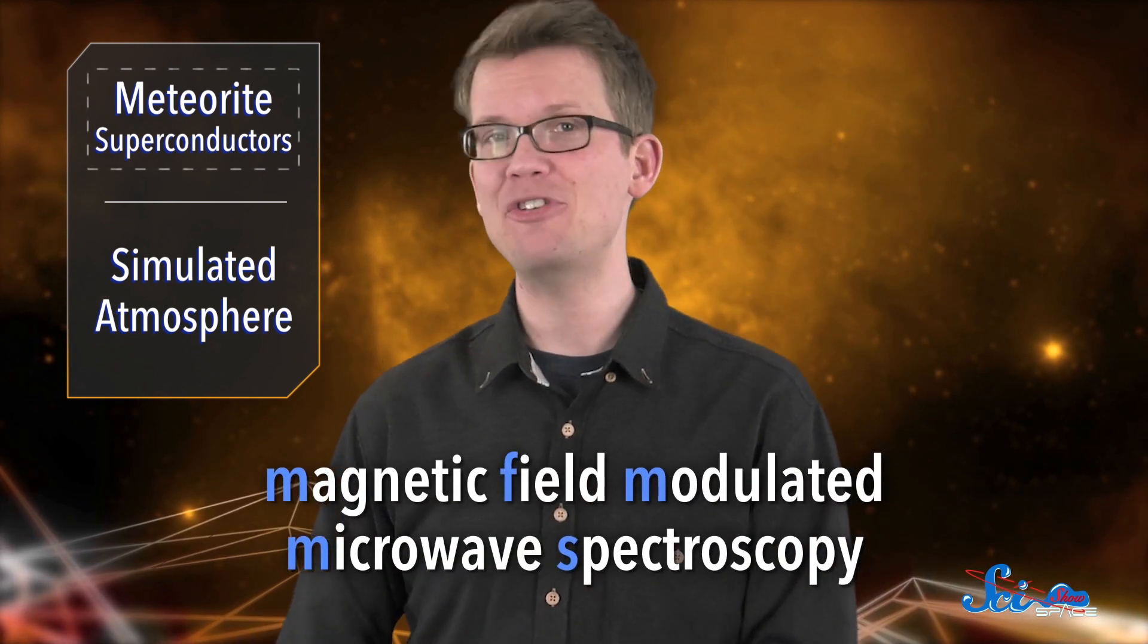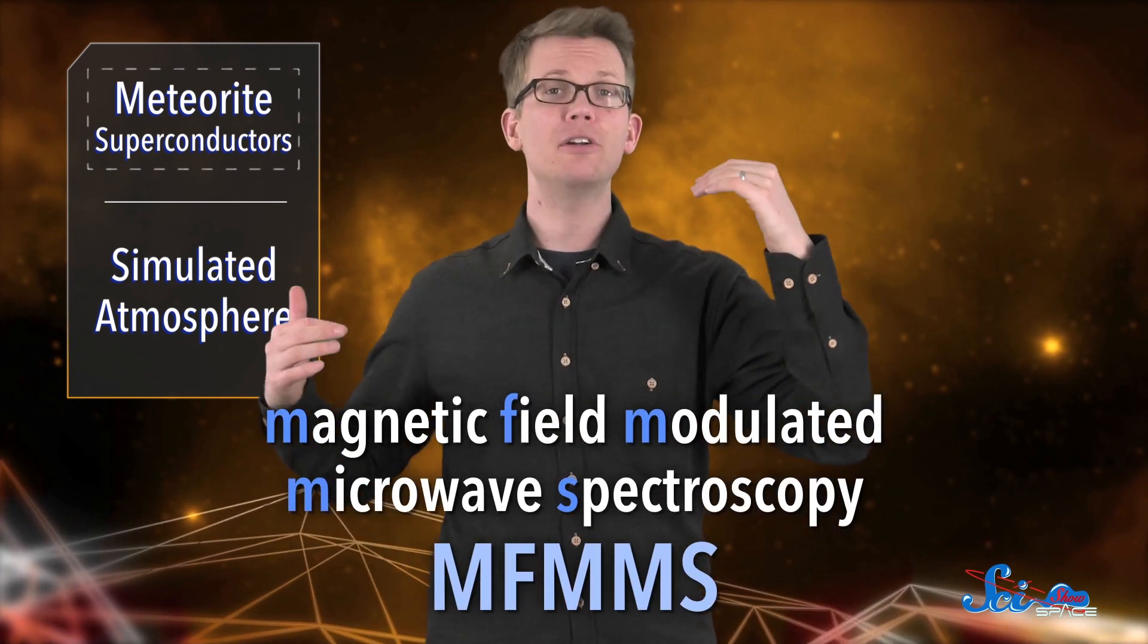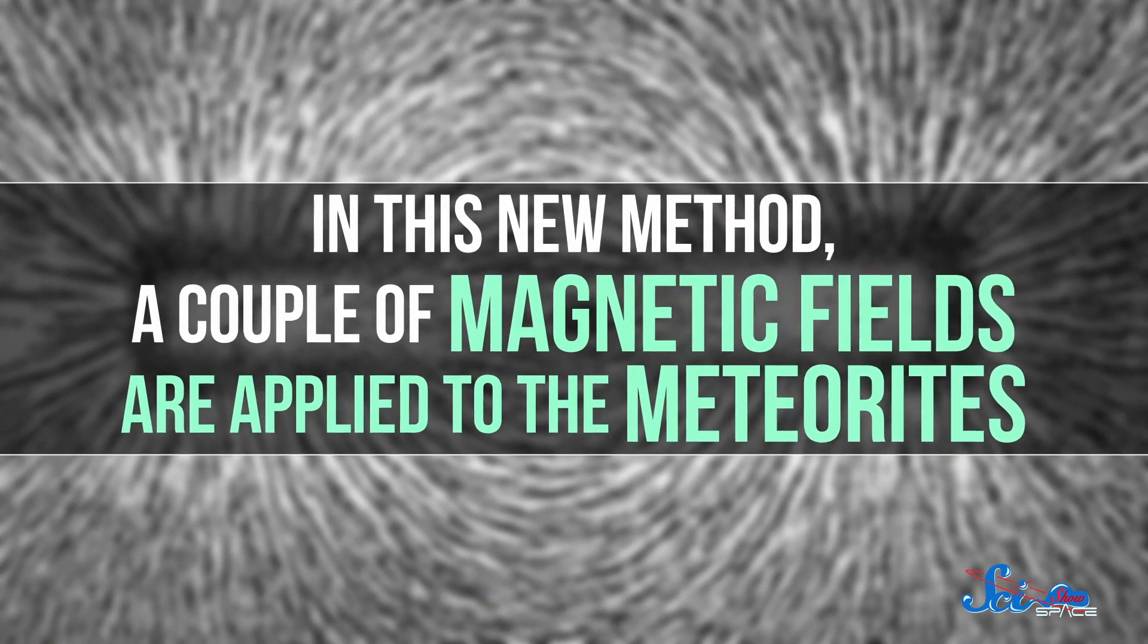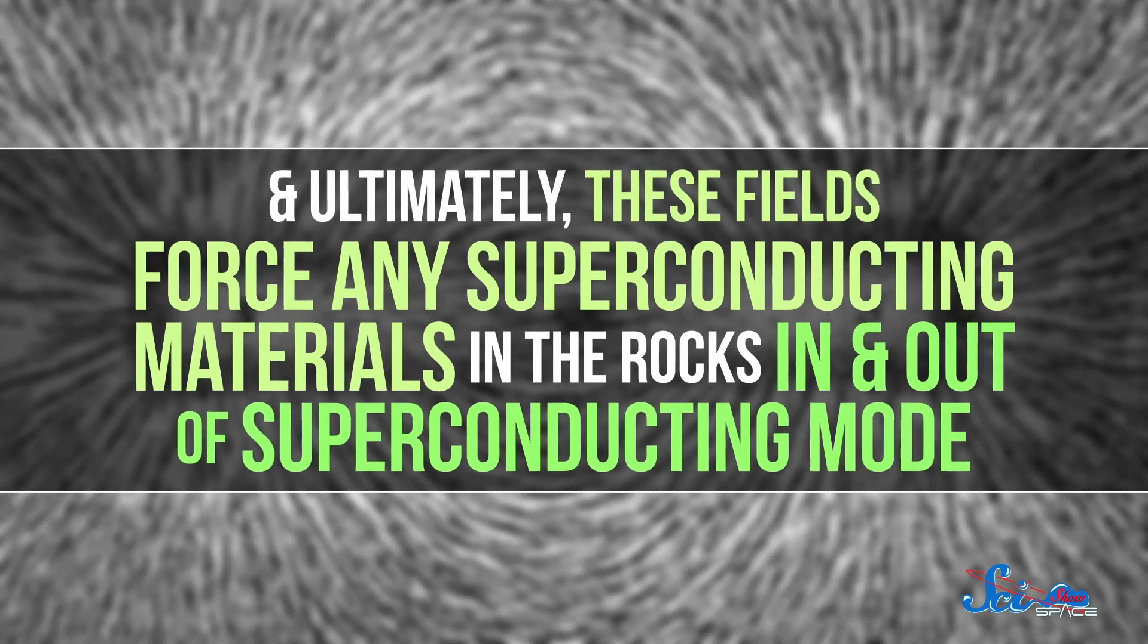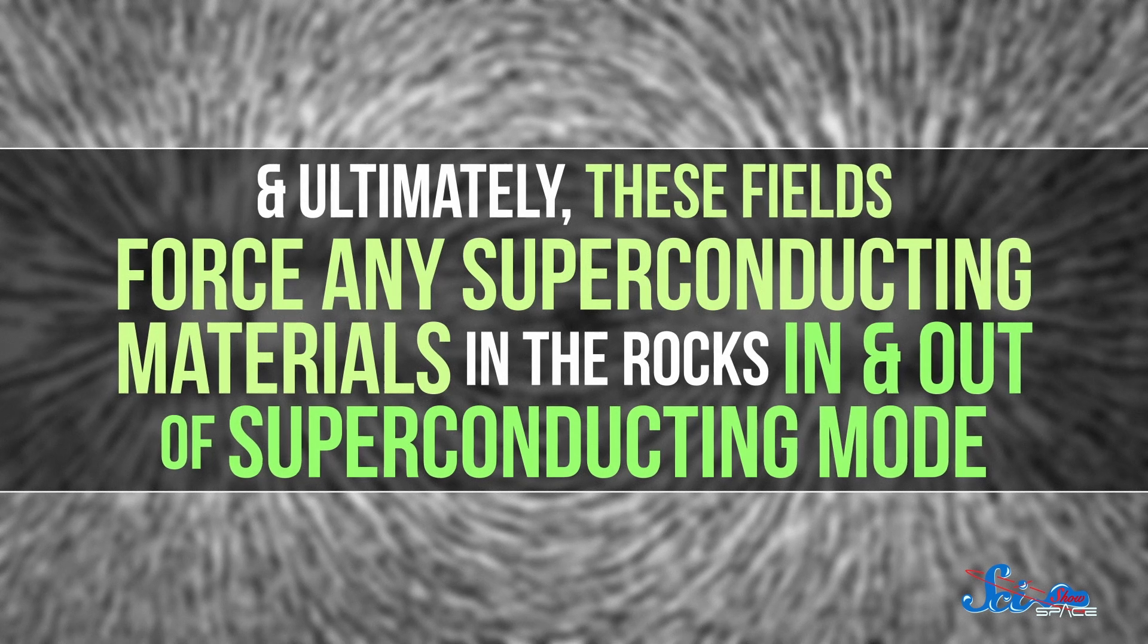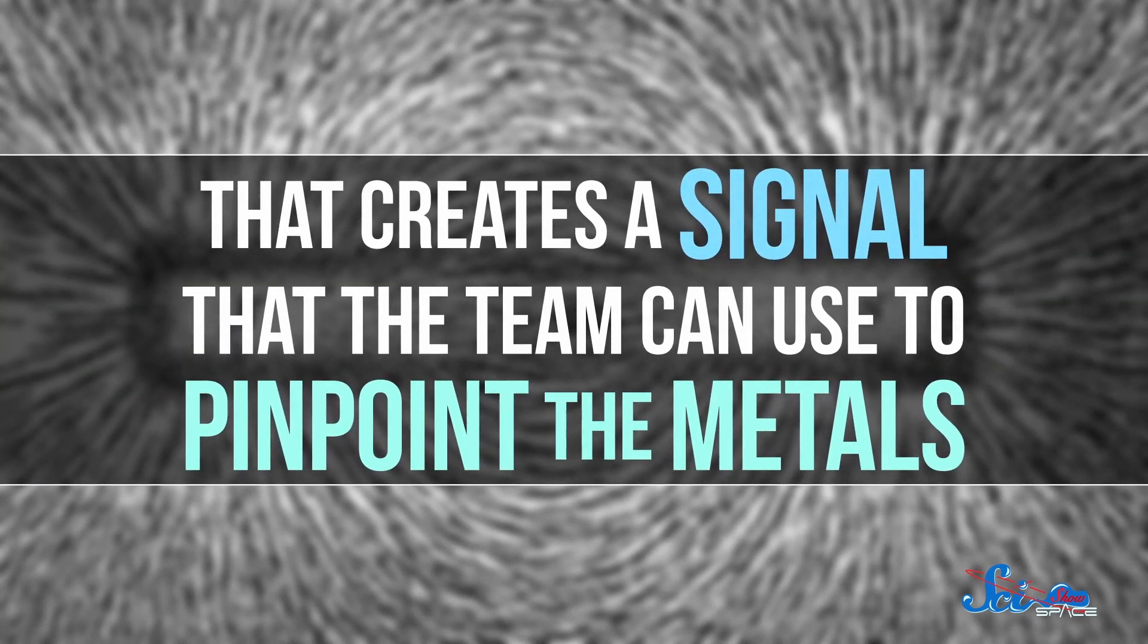It's called Magnetic Field Modulated Microwave Spectroscopy, or MFMMS. It uses superconductors' magnetic properties to locate them in impure samples. In this new method, a couple of magnetic fields are applied to the meteorites, and ultimately, these fields force any superconducting materials in the rocks in and out of superconducting mode. That creates a signal that the team can use to pinpoint the metals, and it works really well.